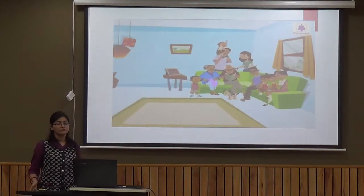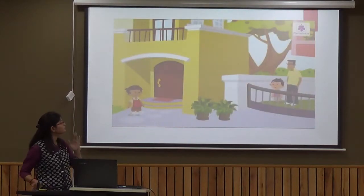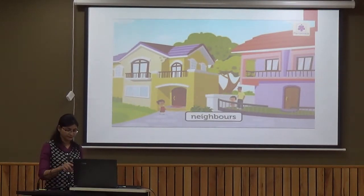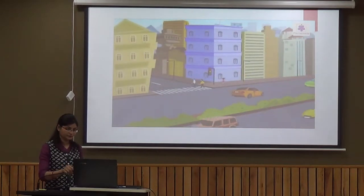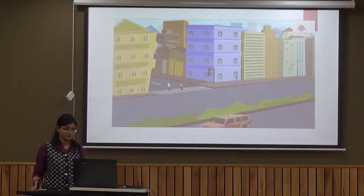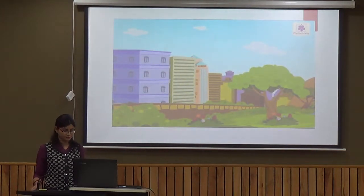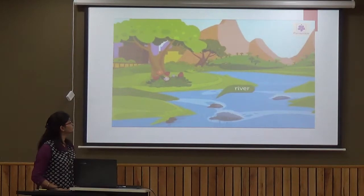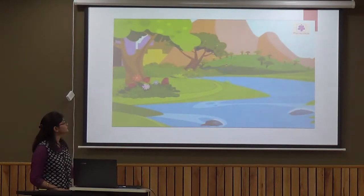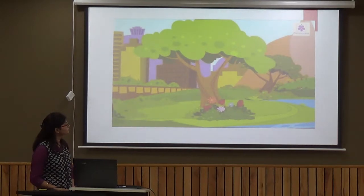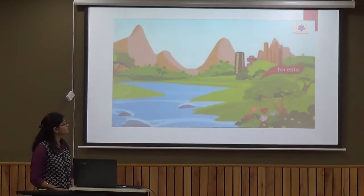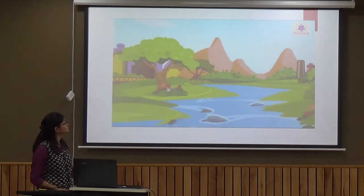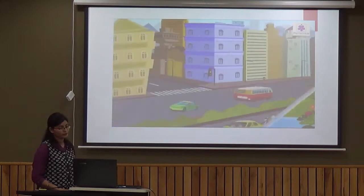Our family lives in a house. Different families live in the houses around us — these families are our neighbors. The area in which we all live is our neighborhood. In the neighborhood, we have natural features which are put there by God: river, hills, plants with flowers, trees, mountains, forests and lakes are all natural features. They add beauty to our neighborhood.